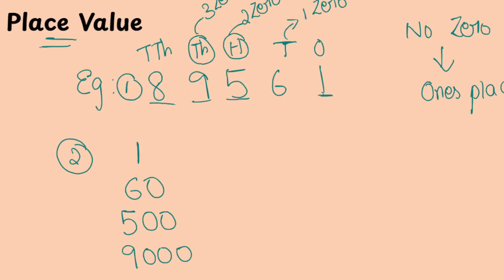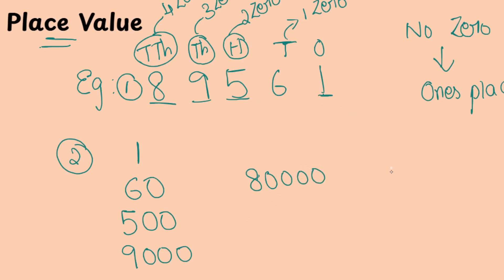The next number is 8, and it is in the 10,000's place. 10,000 has 4 zeros. So you are going to write the number 8 and add 4 zeros — 1, 2, 3, 4. This is known as place value. You are going to add zeros according to the place of the digit.